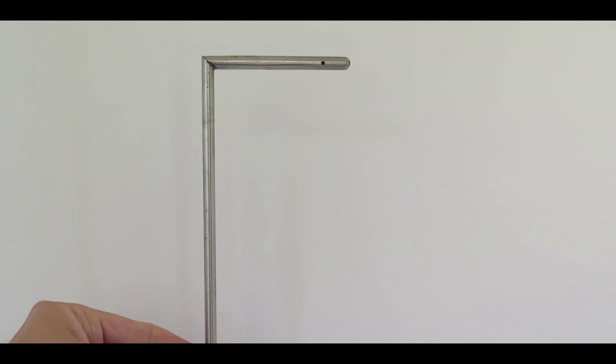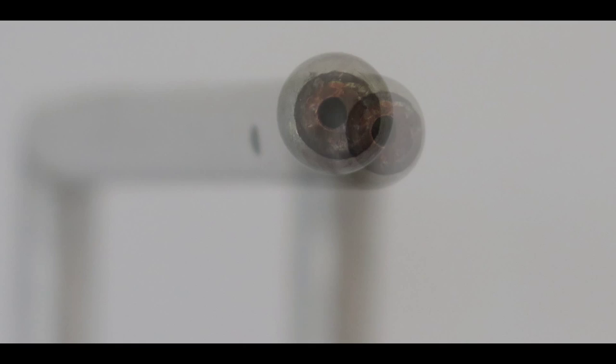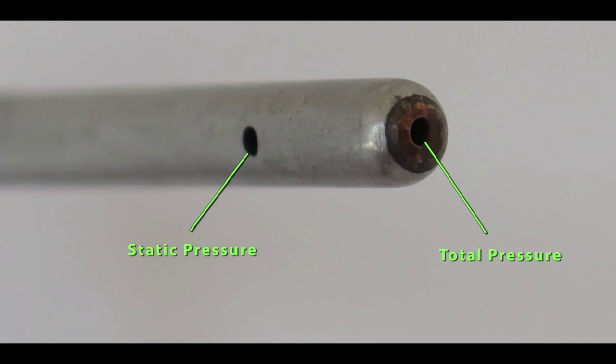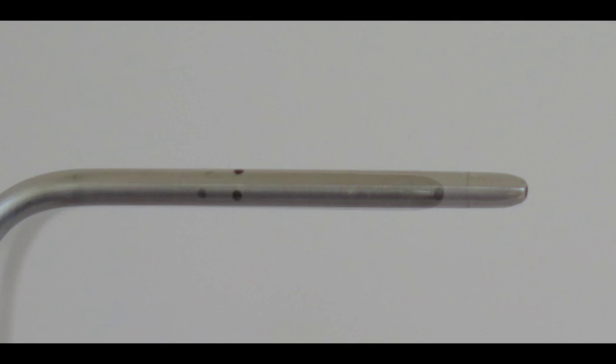So what we have is an image of a pitostatic tube. I'm zooming in on the front of it and you can see the static port. That's looking from the front where you see the total pressure port. And as we angle it you'll be able to see both the total at the front and the static pressure tap on the side. Here's another pitostatic tube and there you can see the taps at the end of it. When we look at the front of that pitostatic tube again, you'll see the total pressure tap and then the static pressure tap on the side.